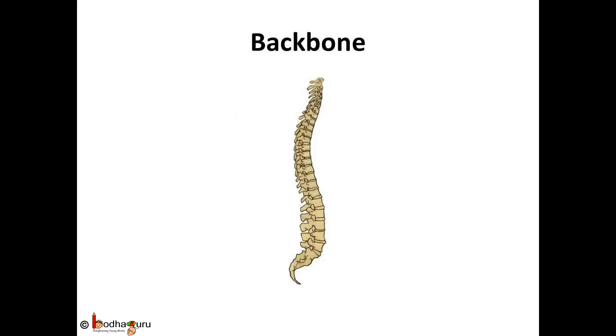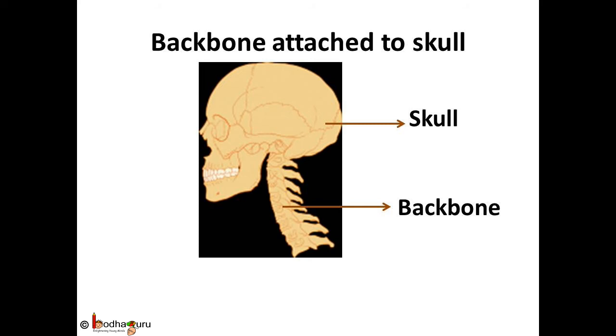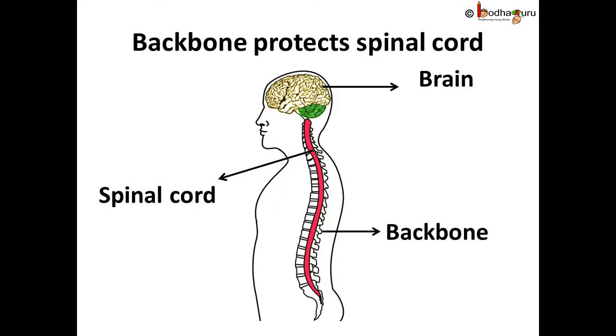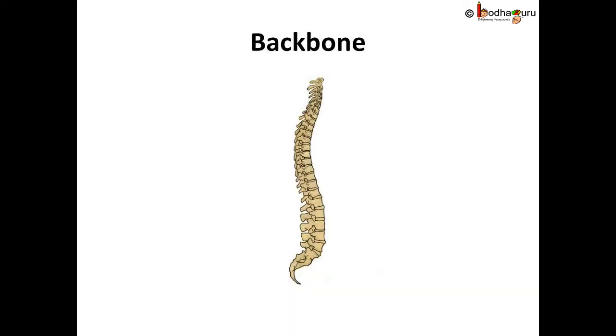The backbone or the spine is also called as the vertebral column. It is attached to the skull. It protects the spinal cord which is an extension of the brain and is extremely delicate. The backbone is made up of 33 small irregular bones. That's a big number. Isn't it children? Each bone has a hole in the centre to let the spinal cord pass through it.